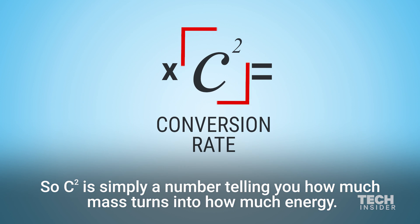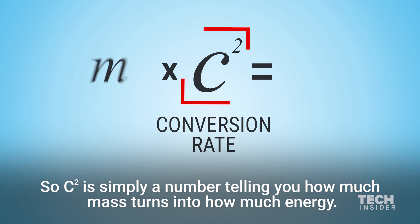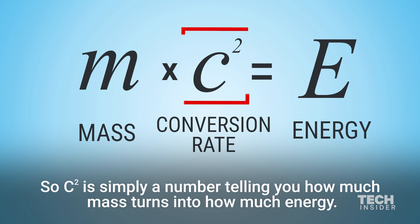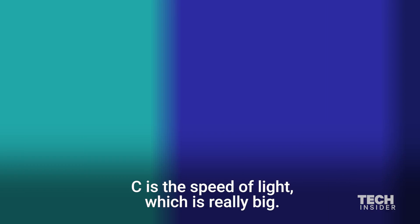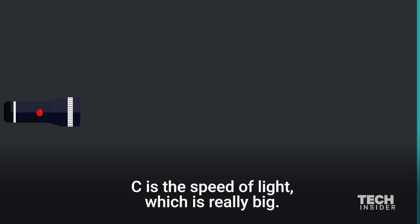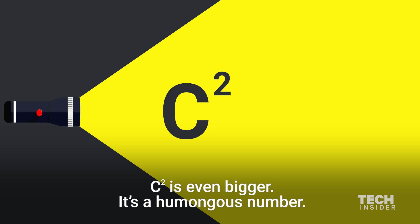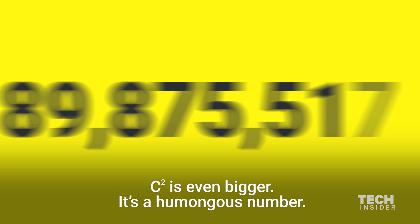So c squared is simply a number telling you how much mass turns into how much energy. C is the speed of light, which is really big. C squared is even bigger — it's a humongous number.